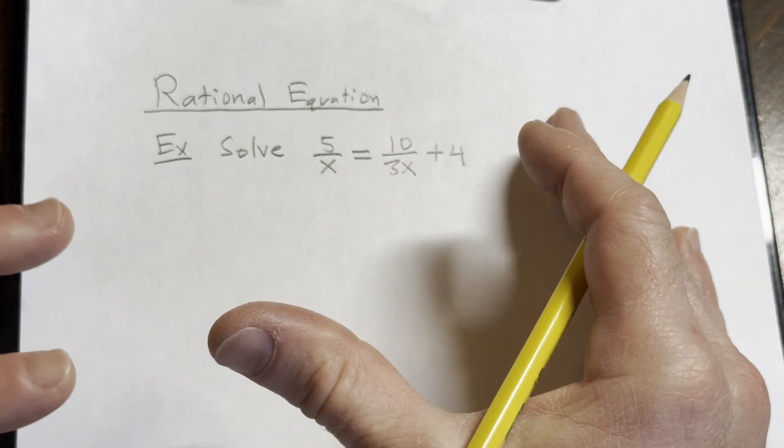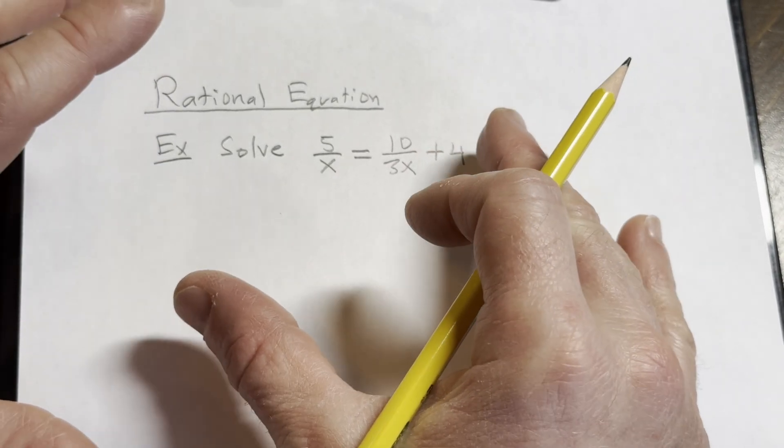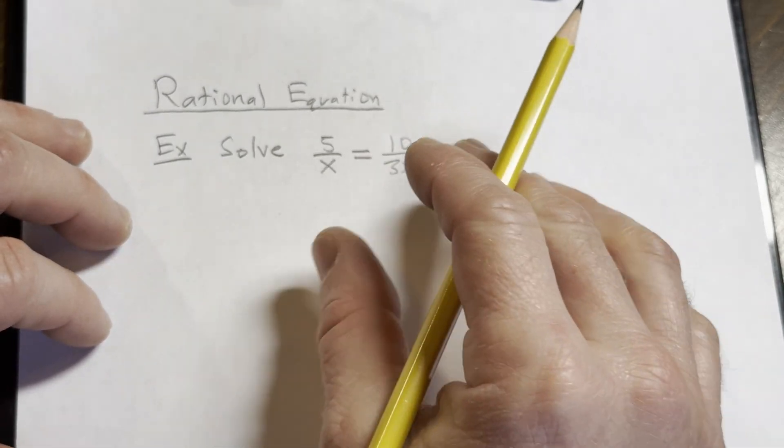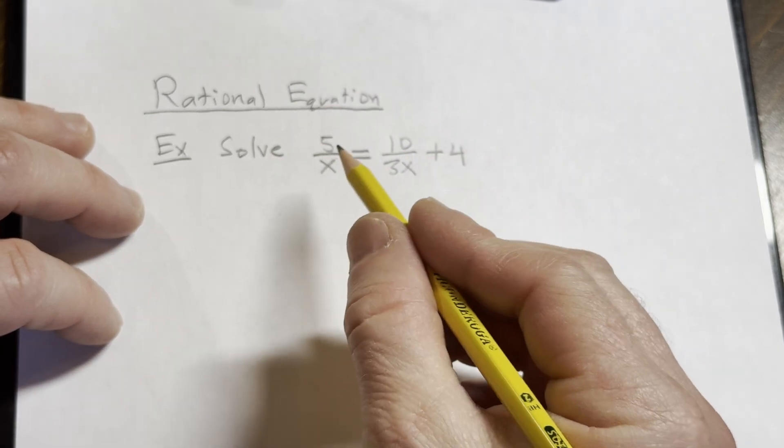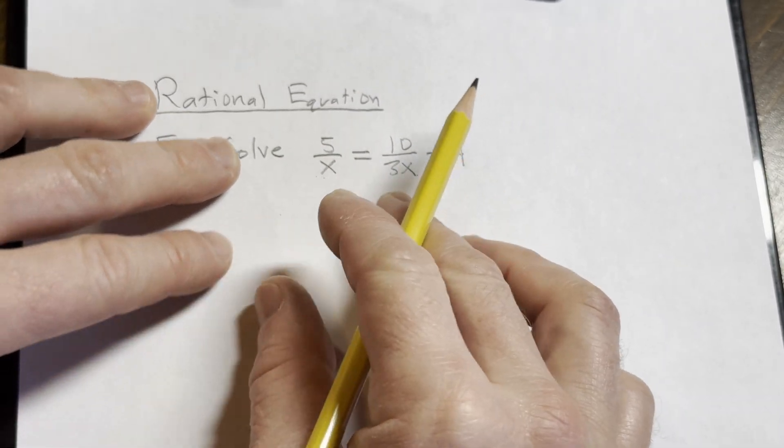We're going to solve this rational equation. That means we're going to find the value of x that makes this equation true. Notice right away that x here is in the denominator, in the bottom of both rational expressions, of both fractions.